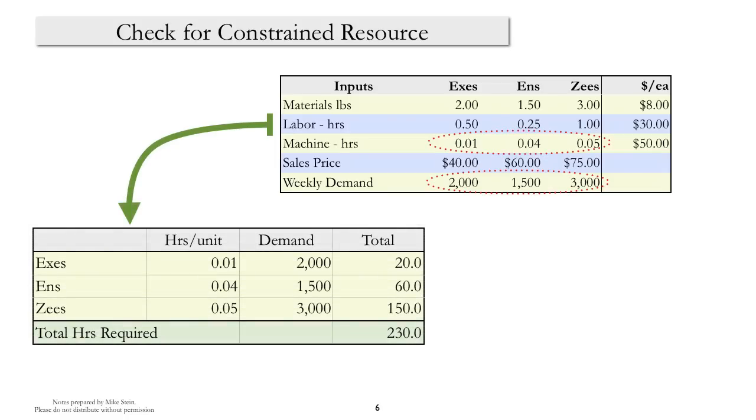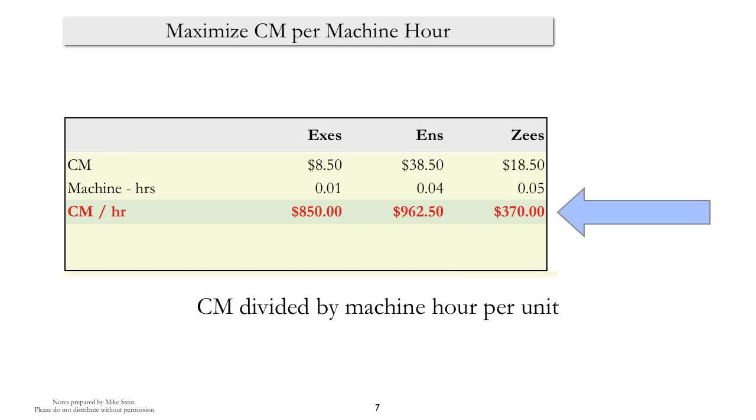Once again, this is a fairly straightforward exercise in arithmetic. And as you can see, when we add up the demand for each of these products and the time it takes to make each unit of the product, we see that if we attempted to manufacture all the units demanded, we would use 230 machine hours, while only 105 machine hours are available. So what this means is that we have to choose which of the products to make.